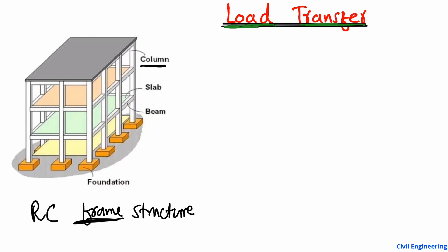In this case, the vertical member is the column. The slab is the flexural member where people loads and furniture loads are coming. The horizontal member here is the beam. Below that we have the foundation — the footing — and beneath the footing we have the soil.